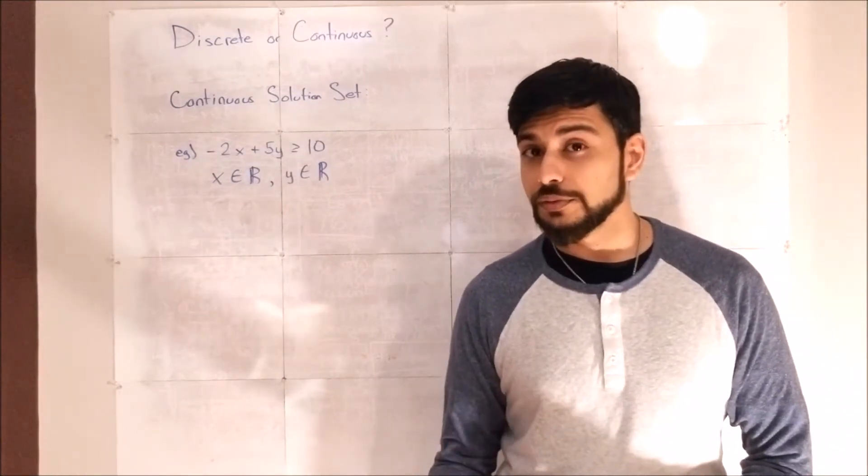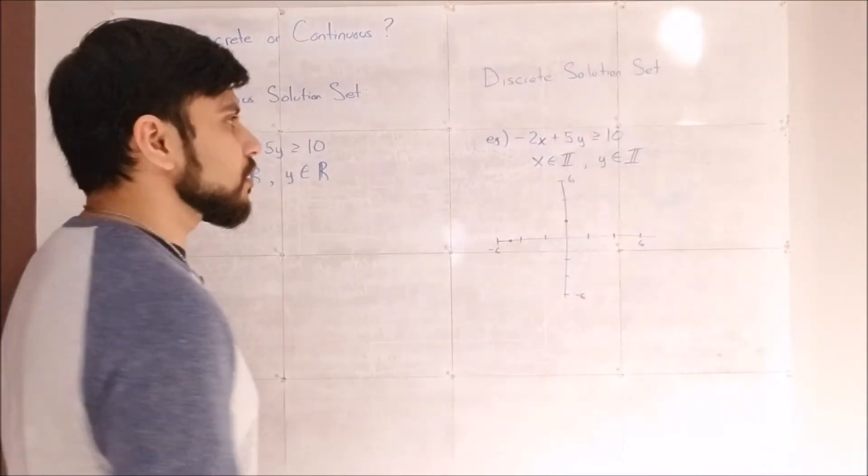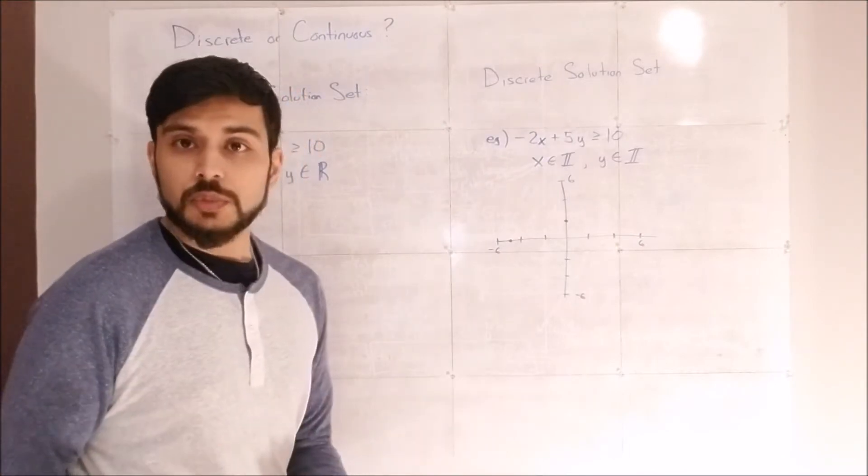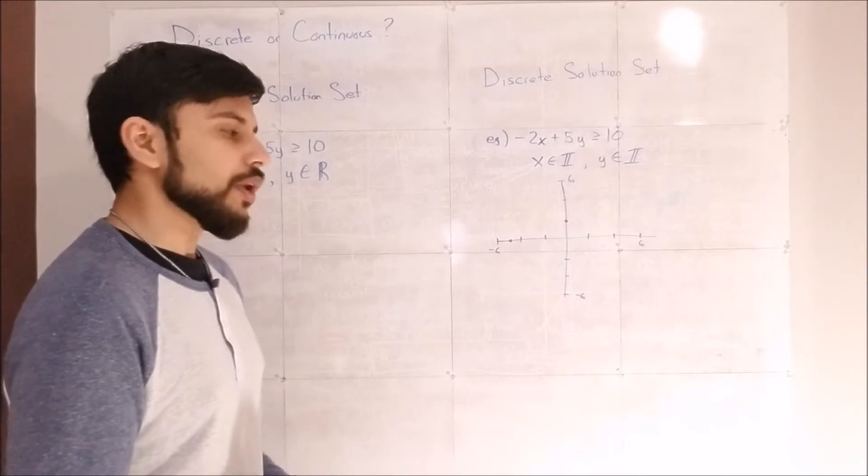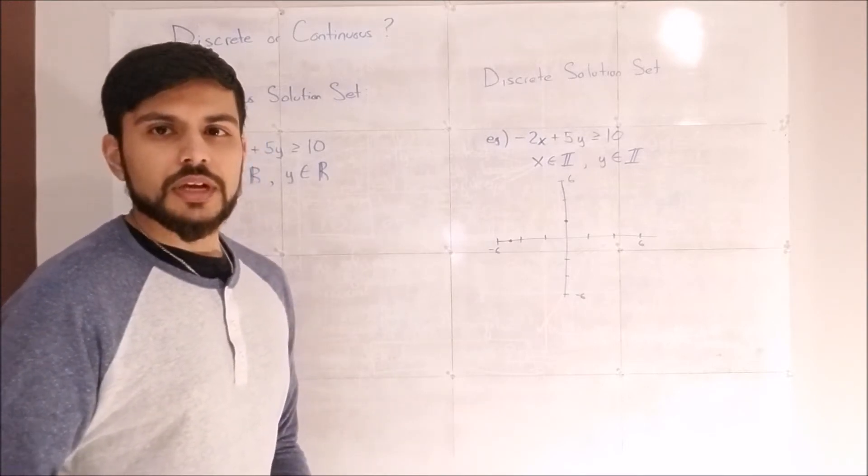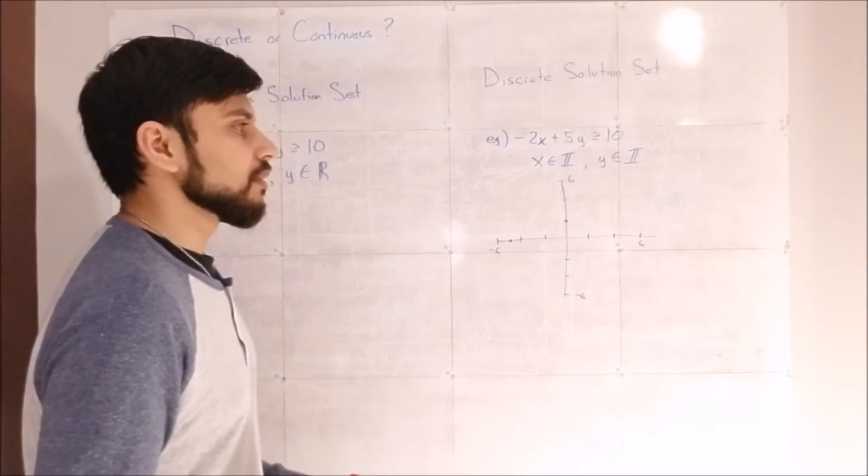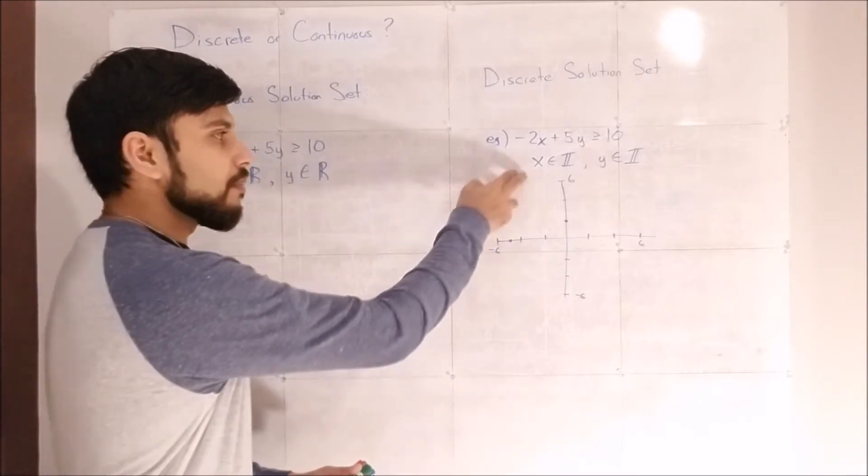Discrete graphs, on the other hand, are a little bit different. So a discrete solution set is quite similar in the sense that you set up your graphs the exact same way. But when you're presenting them, you can only highlight the points that are defined by your variables.